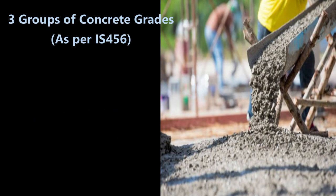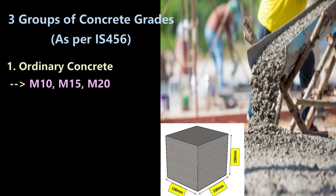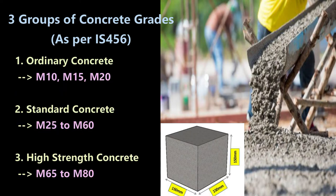Based on the 150 mm cube compressive strength, grades of concrete are categorized into three groups as per IS 456. First, ordinary concrete: grade designations M10, M15, and M20. Second, standard concrete: grade designations M25 to M60. Third, high strength concrete: grade designations M65 to M80.